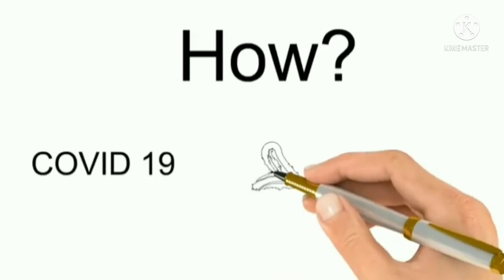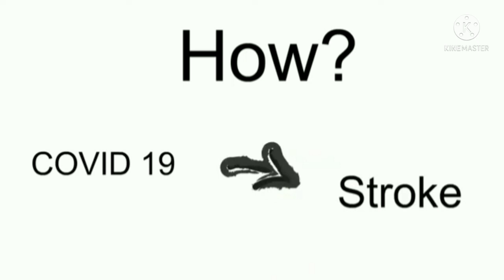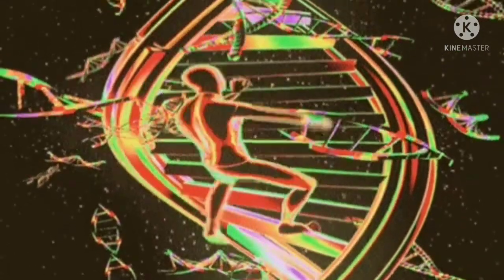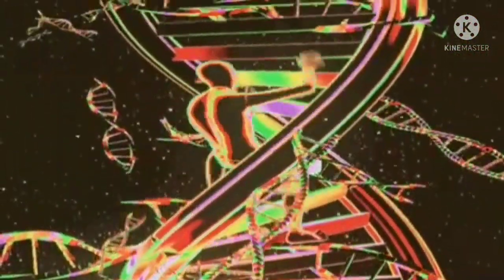But how can COVID potentially cause a stroke if its primary site of interest is the lungs? Well, the possible mechanism behind stroke in COVID patients might be attributed to a state called hypercoagulable state.